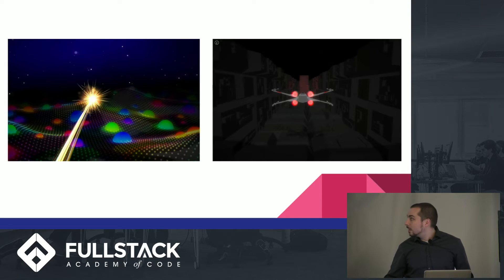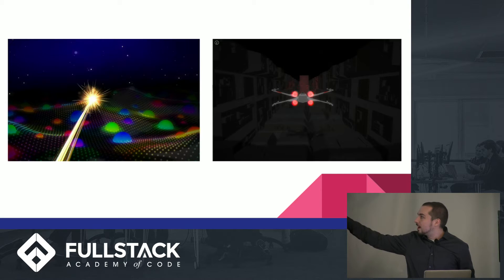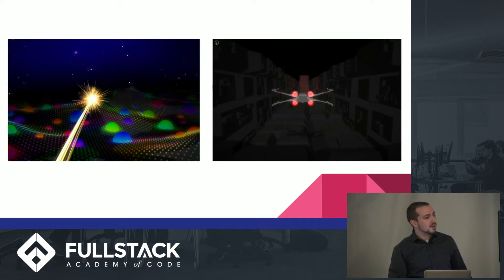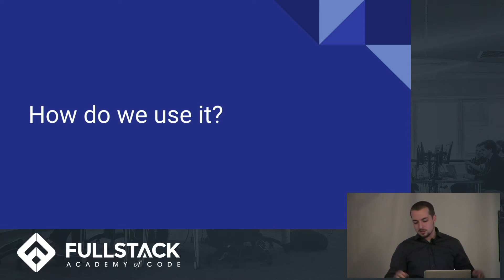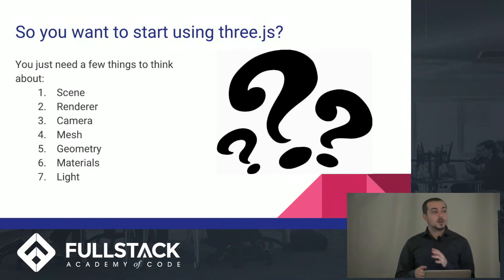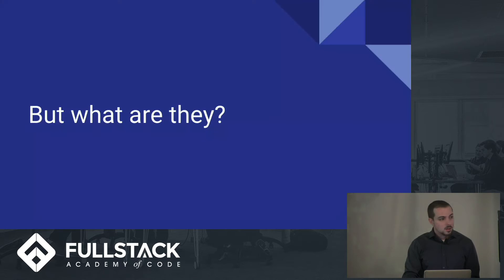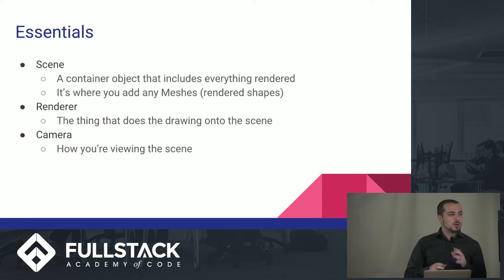And if you're really good at it, you can do things more like this. There are interactable games — you see the X-wing going down the trench. I don't know what the rainbow thing is, but it looks really cool. So how do we use it? Well, there's a few things you've got to start thinking about. You have to think about a scene, a renderer, a camera, mesh, geometry, materials, and light.